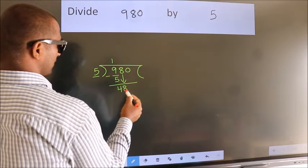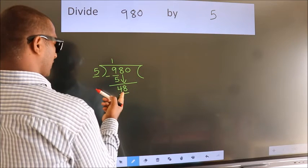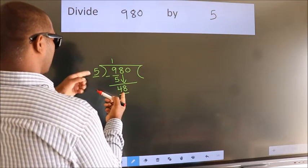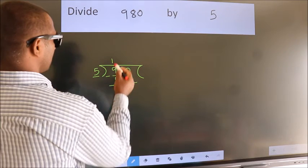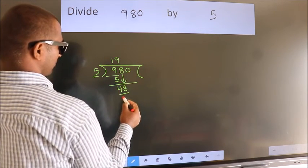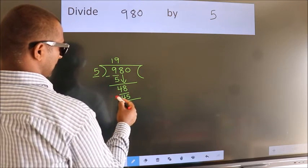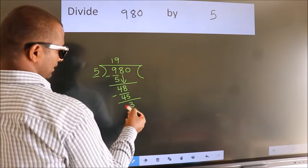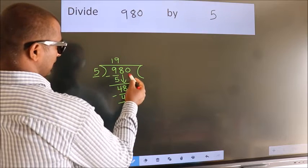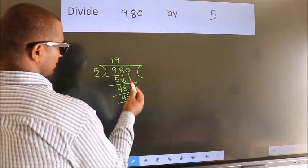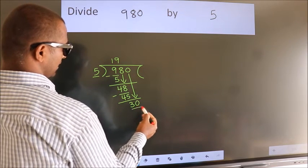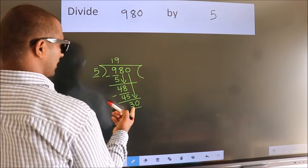Now we subtract, we get 3. After this, bring down the beside number, so 0 down. So 30. When do we get 30 in the 5 table? 5 times 6 is 30.